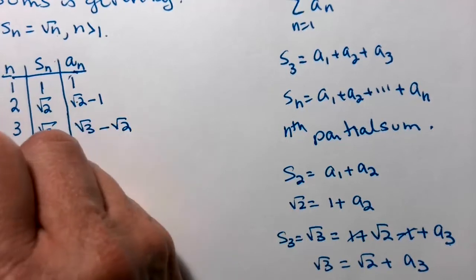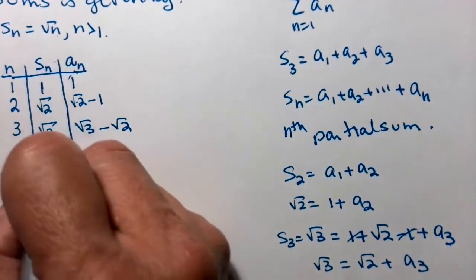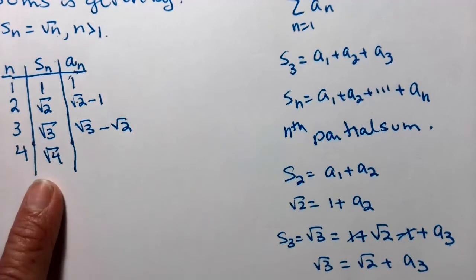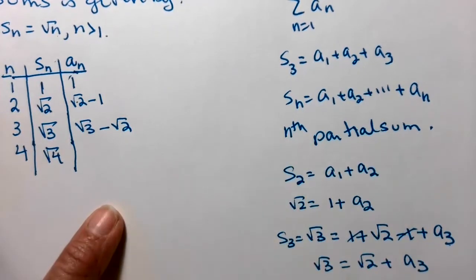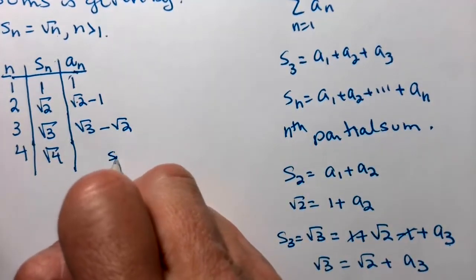Let's do one more. Let's make sure. So if n is 4, s sub 4 is the square root of 4. Yes, you're absolutely right, it is a 2. Don't write a 2. You want to leave it as a square root of 4.